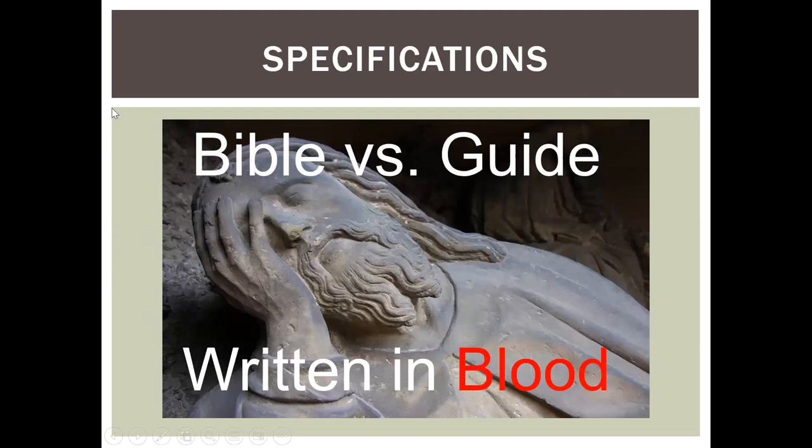One thing I learned early on in my career is there are two ways to look at specifications. You can look at them as black and white — this is the word, this is the Bible, that's it. Or you can use them as a guide, or something in between. My method is to use them more often as a guide than a Bible, especially because environmental projects are so much a gray area. No matter how well you write a spec for an environmental situation, you're probably going to have to change it once you get out in the field.